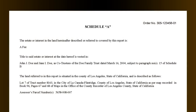In Schedule A, we start off with the estate or interest of the land hereinafter described, referred to in this report as a fee. A fee is the highest type of estate or interest an owner can have in land — freely transferable or inheritable — and whose owner is entitled to the possession.